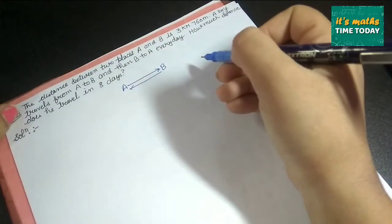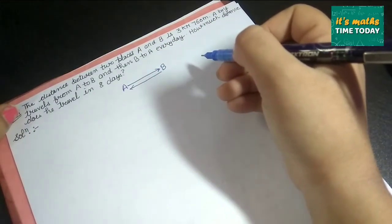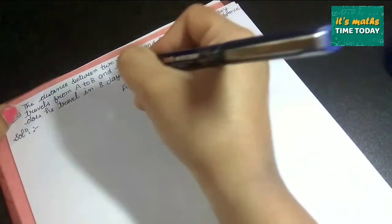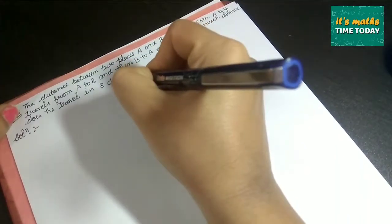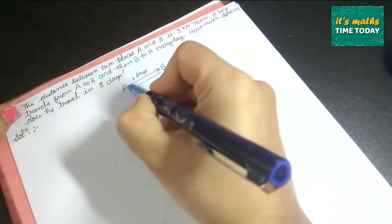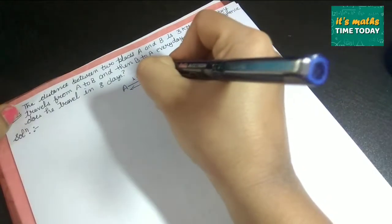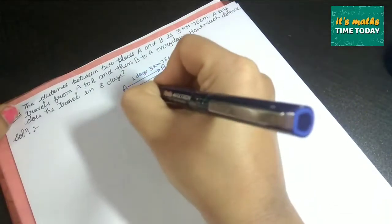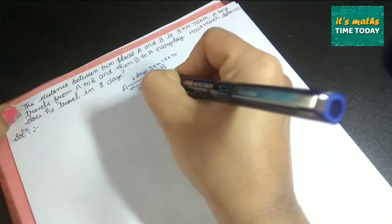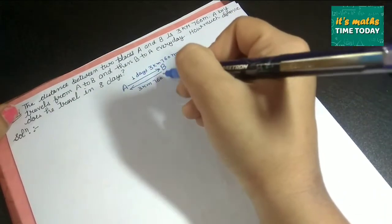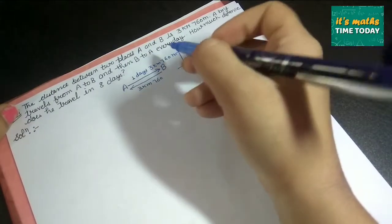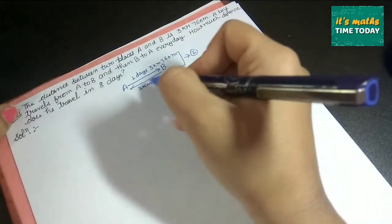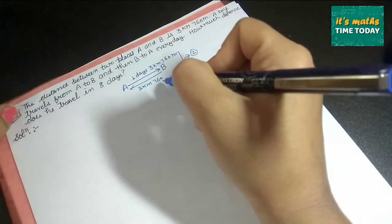So in eight days, how much distance will he travel? In one day, he is traveling 3 km 760 m going there, and the same distance coming back — so he covers double the distance: 3 km 760 m going, and 3 km 760 m returning.